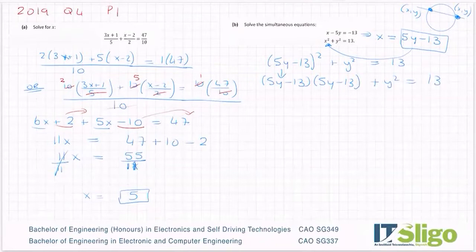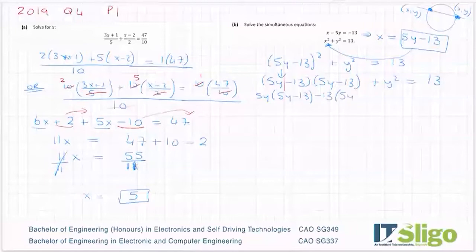So this is (5y - 13) by (5y - 13) + y² = 13. Lots of 13. And then you can split the first bracket if you wish, so that you have 5y by everything in the second bracket, and go back for the -13 by everything in the second bracket, +y² = 13.